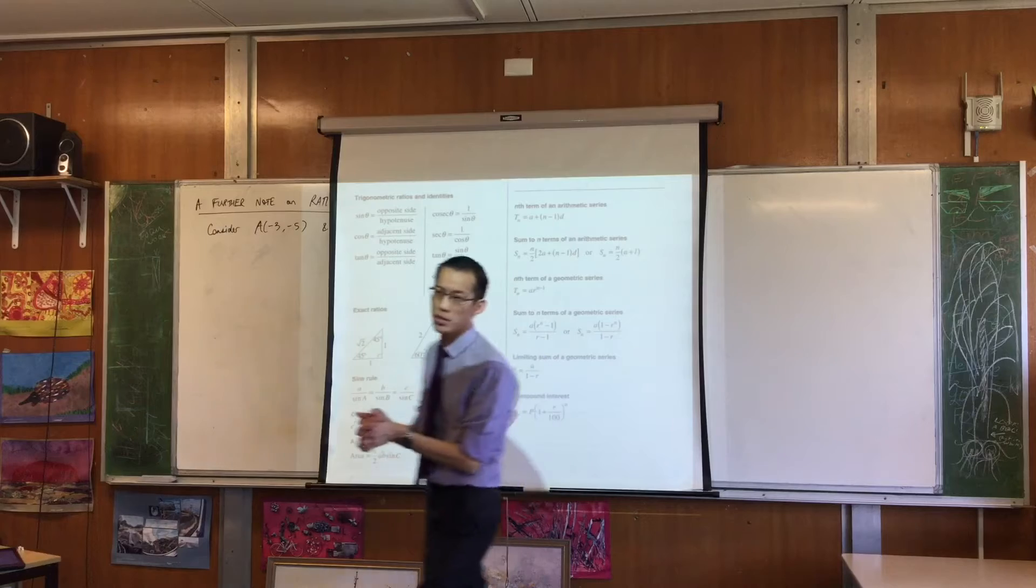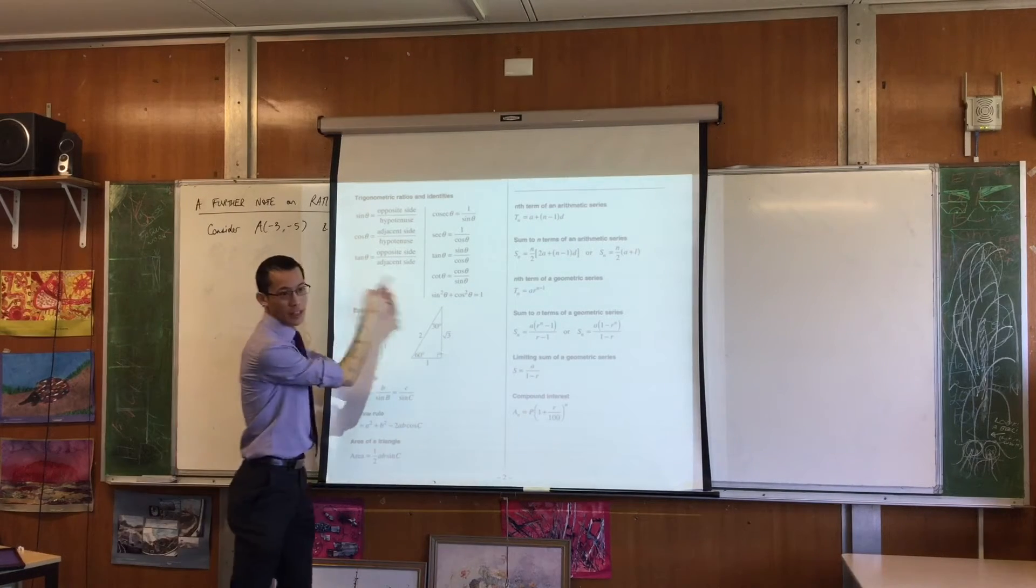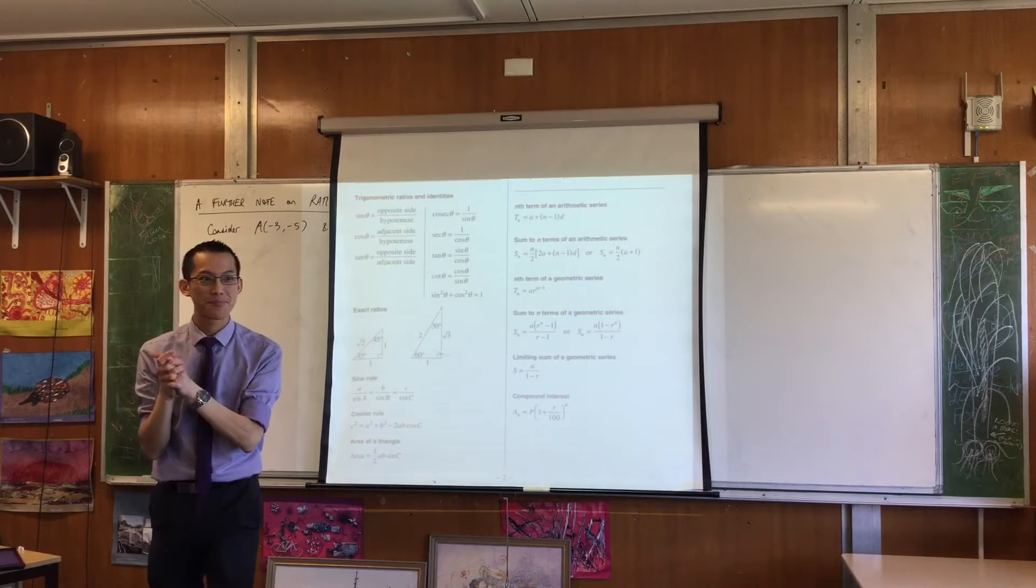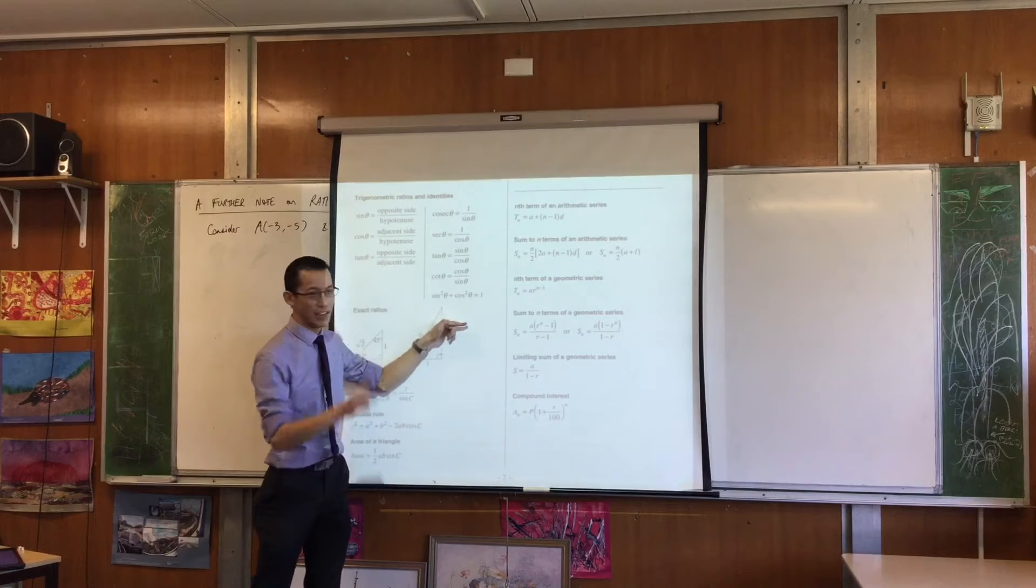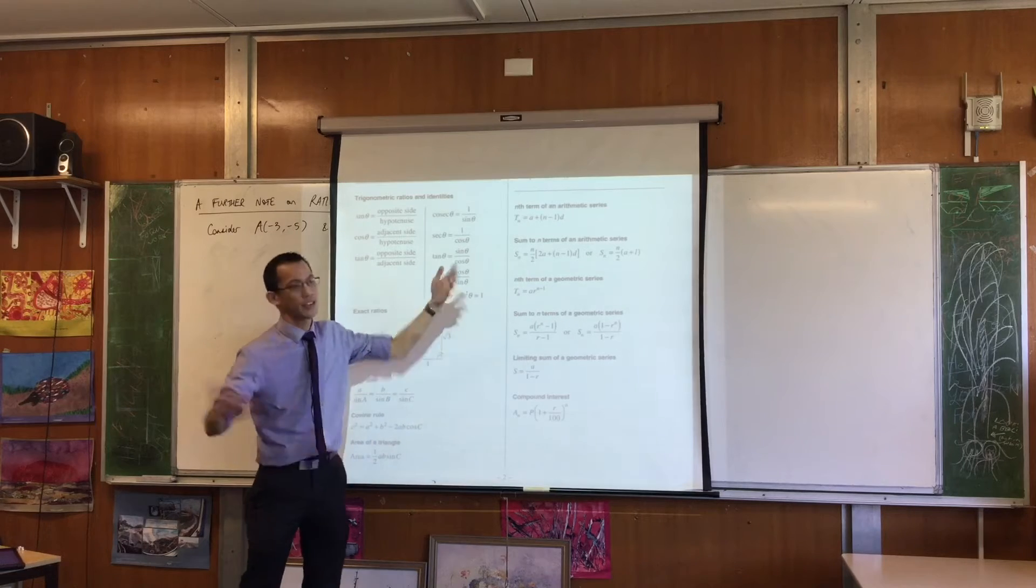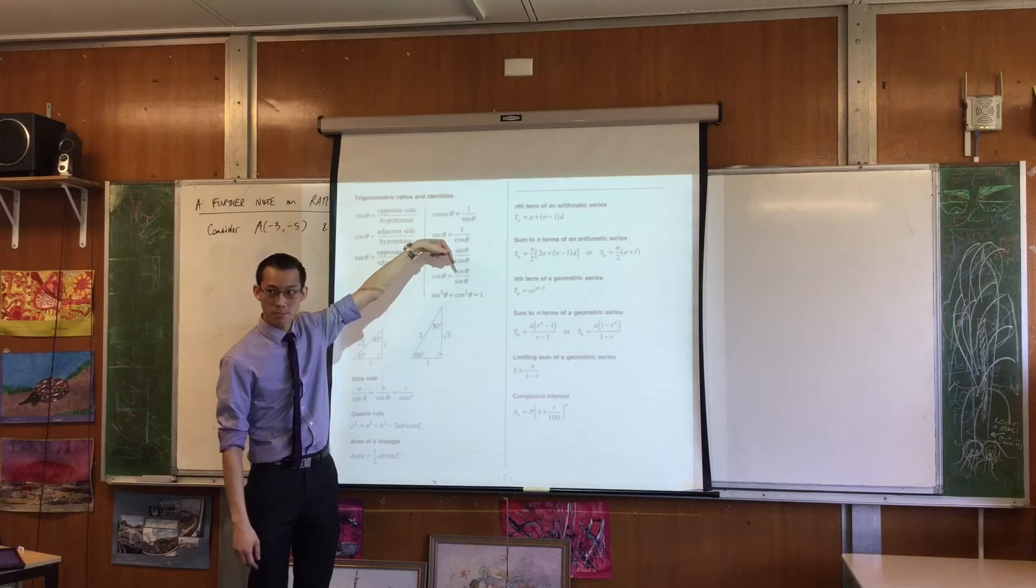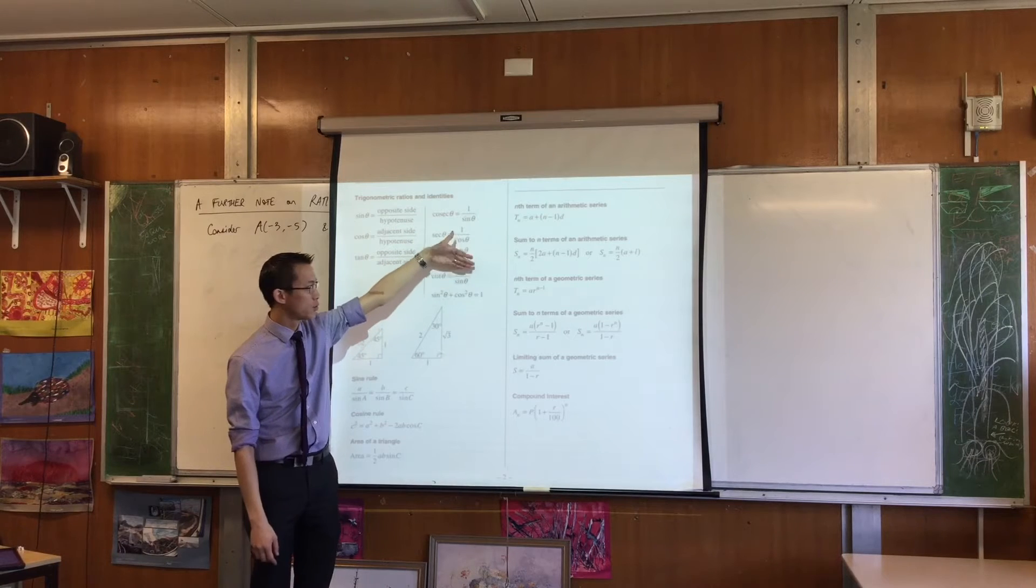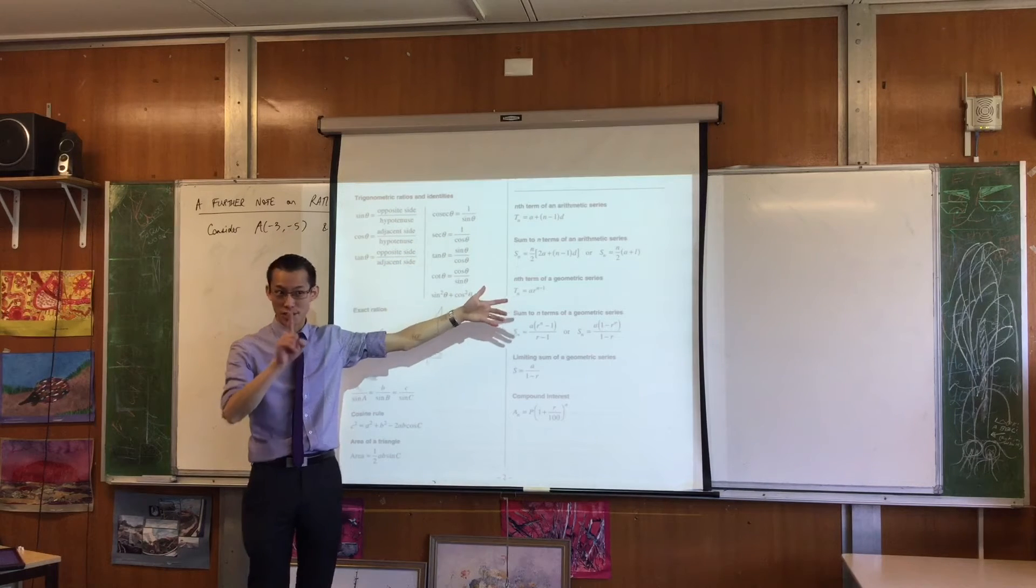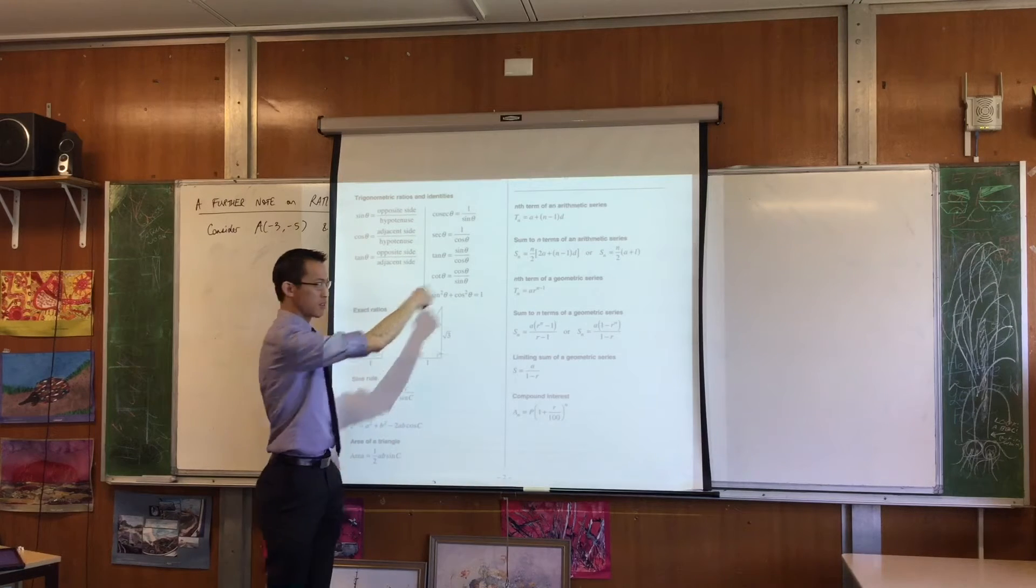For example, if you wanted the one that had tan squared in it, what would you do to this? You divide through by cos squared and everything is squared, so that would turn into tan squared plus one equals sec squared. So that's fine.